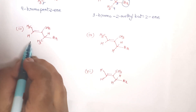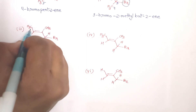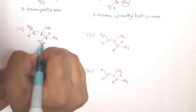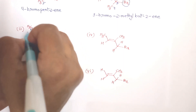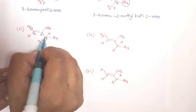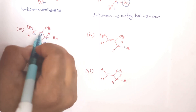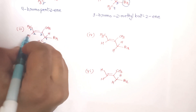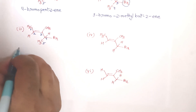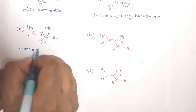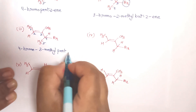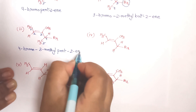For the next example, number the compound going down the longest chain to get 5 carbon atoms: 1, 2, 3, 4, 5. At position 4 there is a bromine substituent; at position 3 there is a methyl substituent; the double bond starts at position 2, so 'pent-2-ene'. The full name is 4-bromo-3-methylpent-2-ene.